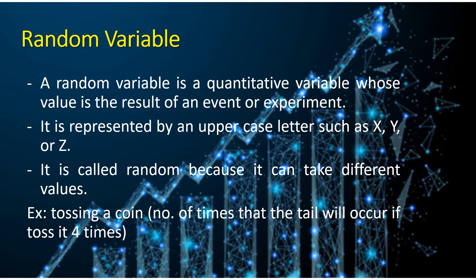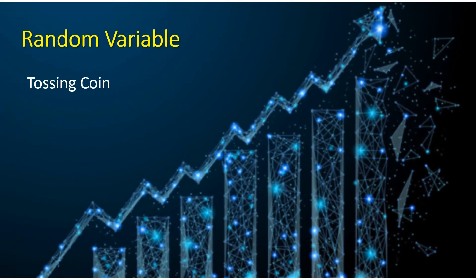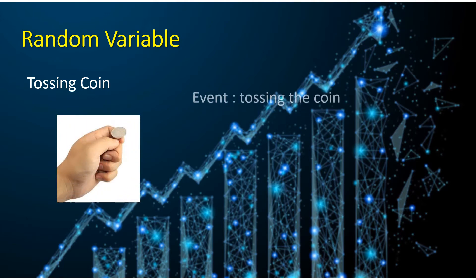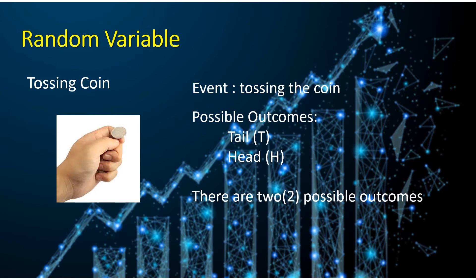An example would be tossing a coin. Let's say you are more concerned with identifying the number of times that the tail will occur if that coin is tossed four times. So, the number of appearances of the tail will be your random variable. When we toss a coin, the tossing of the coin is what we call the event or the act of getting a result. The possible outcomes are the results out of an event. In tossing a coin, there are two possible outcomes: either a tail will occur or a head.